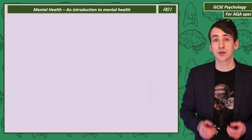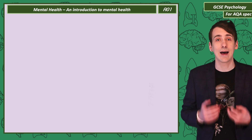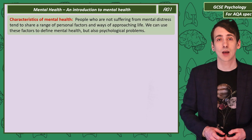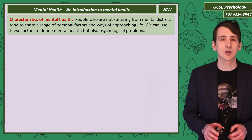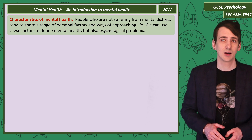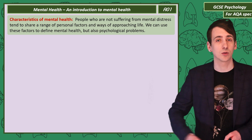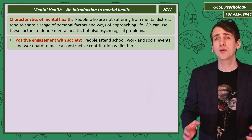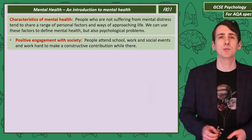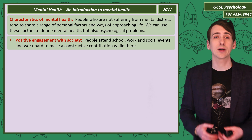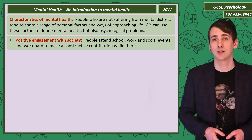Before we discuss psychological problems, we should have a good idea about what it means to be psychologically healthy. We find that people who are not suffering from mental health problems share a range of characteristics. If we use those to define mental health, we can then use them to define psychological problems. So positive engagement in society is one characteristic — this can be as simple as attending school and work and making a positive contribution, or even just attending social events.